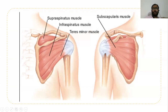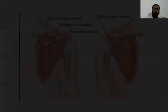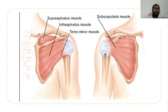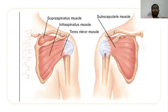The supraspinatus muscle is connected superiorly and helps the initial abduction of the shoulder. Initial abduction is facilitated by supraspinatus, and then the deltoid muscle helps further abduction. Posteriorly, infraspinatus and teres minor help the external rotation of the shoulder joint. These four muscles constitute the rotator cuff muscles.